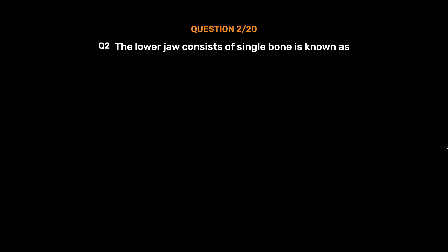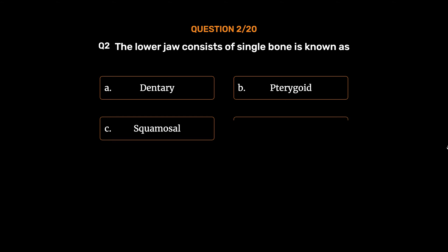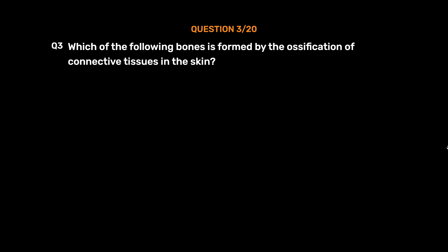The lower jaw consists of a single bone known as: Option A. Dentary, Option B. Pterygoid, Option C. Squamosal, Option D. Maxilla. The correct answer is Option A, Dentary.